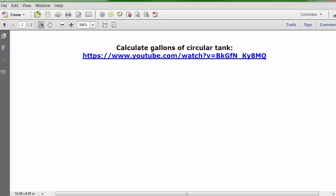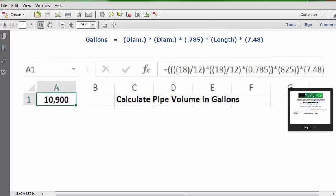You can go to my YouTube channel and in the search bar, type in wastewater Dan and calculate gallons of circular tank, and this video will come up. Or you can just go straight to this URL. That's another video that uses the same formula.